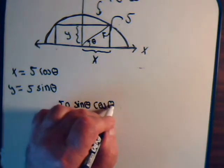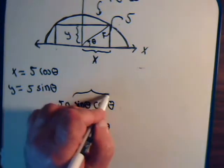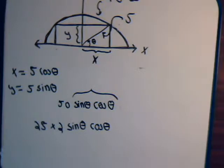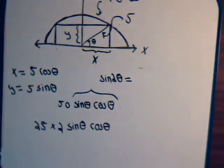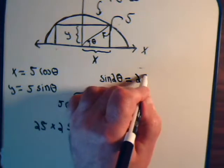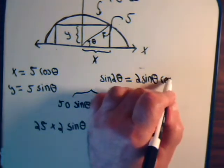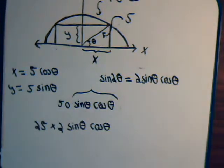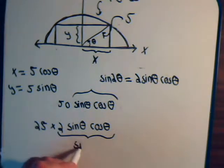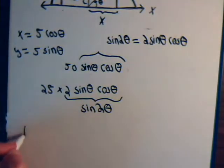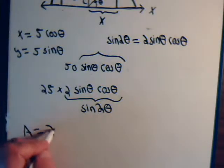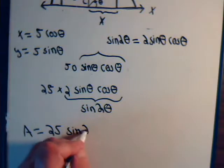When you see that, it should remind you of one of the basic trig identities: the sine of 2 theta equals 2 times the sine of theta times the cosine of theta. So 50 times sine(theta) times cosine(theta) is 25 times sine(2 theta). We have an expression then that the area equals 25 times the sine of 2 theta.